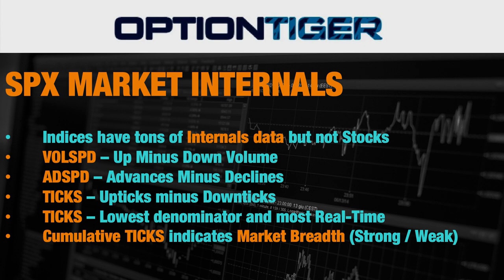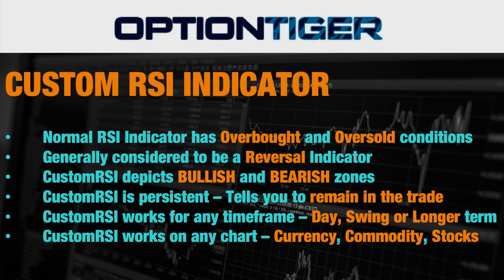So today we are going to look at the ticks indicator, and also something called a custom RSI. If you've heard of the RSI indicator, it generally tells you when a stock is overbought or oversold — considered a reversal signal at the top and bottom. But this custom RSI has been customized to depict bullish and bearish zones, so it becomes persistent. Once it gets into the bullish zone it could remain there, telling you to stay in the trade. The custom RSI works for any timeframe — day, swing, or longer term — and on any chart: currencies, commodities, or stocks.